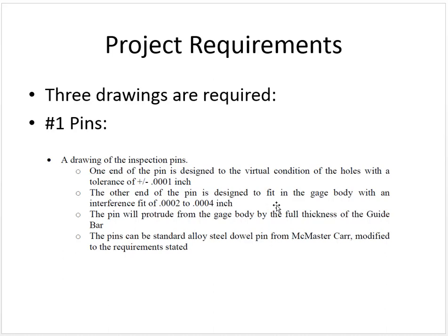The other end of the pin is going to fit into the gauge body. I want you to design the other end of the pin and the gauge body such that when the pin is installed in the gauge body, there is a two-tenths to four-tenths interference fit between the pin and the gauge body — so the hole in the gauge body is actually smaller than the pin by two-tenths to four-tenths. This pin needs to protrude from the gauge body the full thickness of the guide bar — the pin needs to extend all the way to the upper surface minimum of the guide bar. The pins can be a standard alloy steel dowel pin; you can start with a McMaster-Carr part and modify it to the requirements stated here.